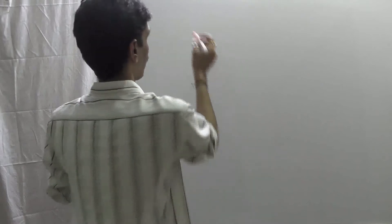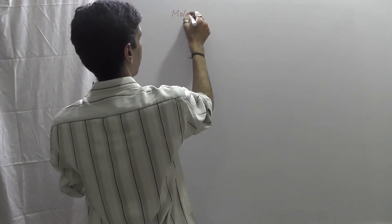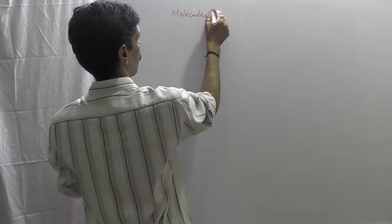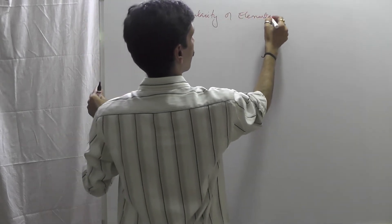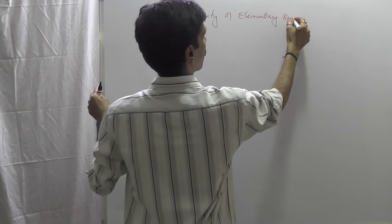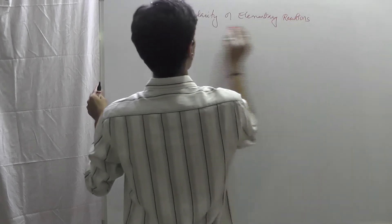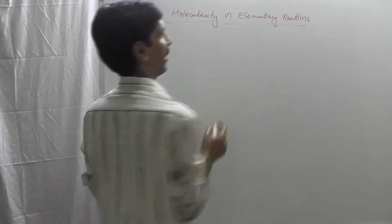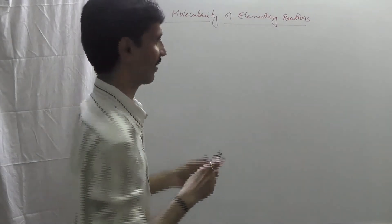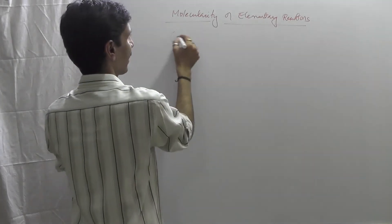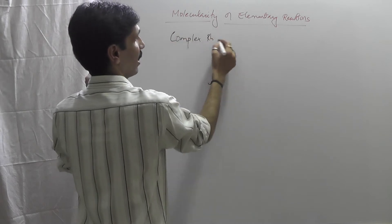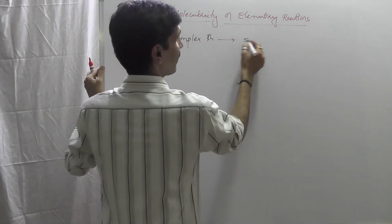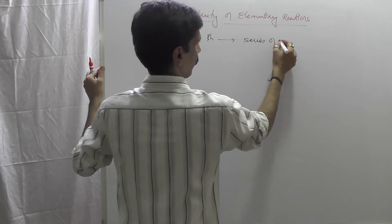My dear friends, now we are going to the next concept, and that is molecularity of elementary reactions. First of all, let's try to understand that when we talk about complex reactions — what is basically a complex reaction? It is made up of a series of elementary reactions.